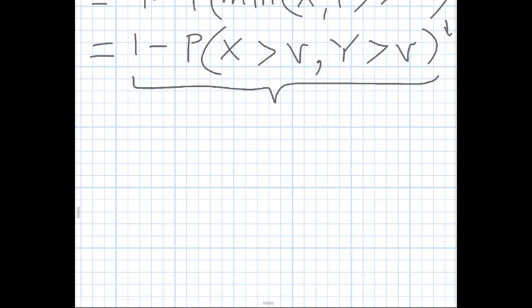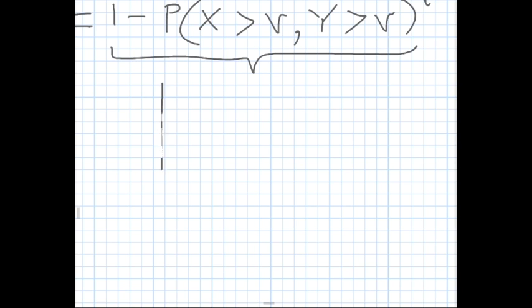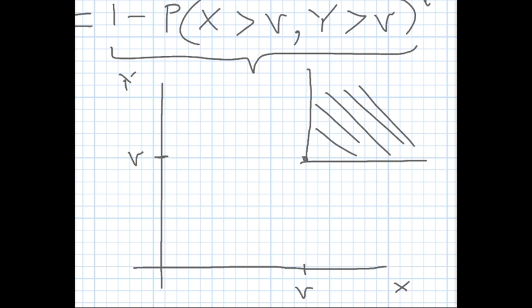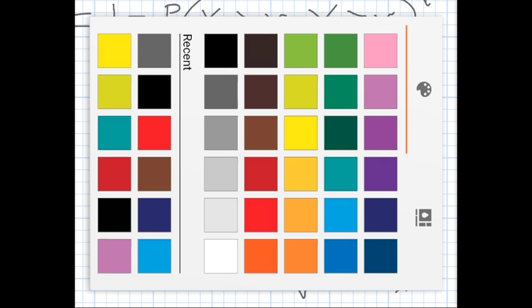To get a bigger picture, consider the X-Y plane with the x-axis and y-axis. We mark the value v on both axes, and the point where x and y both equal v. The entire X-Y plane represents all probabilities of X and Y, so the total area equals 1. The region where X > v and Y > v is the upper-right corner. We are interested in all the remaining area.